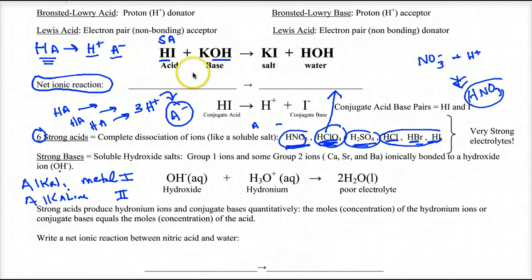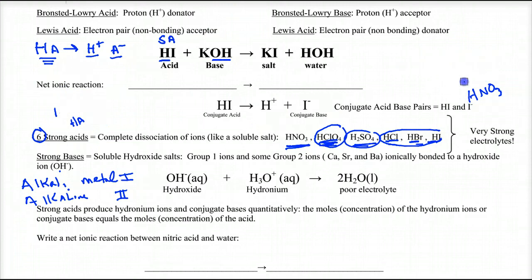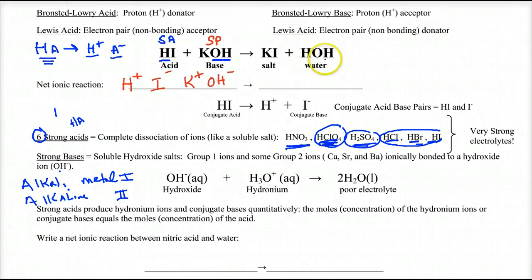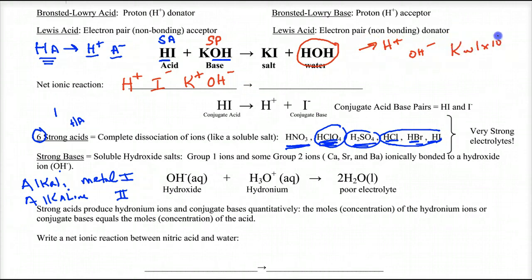Now that we know what's strong and weak, let's do some net ionic equations. For a net ionic equation, we have to consider who's my strong acid and strong base. In this case — HI and KOH — I have a strong acid and a strong base. Therefore they completely dissociate into H+, I-, K+, and OH-.